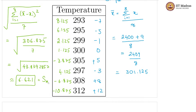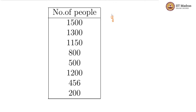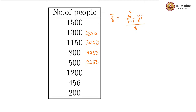Now let us calculate Sy. For the y variable, we calculate the mean ȳ, which is the sum of yi from i equals 1 to 8, divided by 8. The sum is 1500 plus 1300 plus 1150 plus 800 plus 500 plus 1200 plus 456 plus 200, which equals 7106. So ȳ equals 7106 divided by 8, which is 888.25.